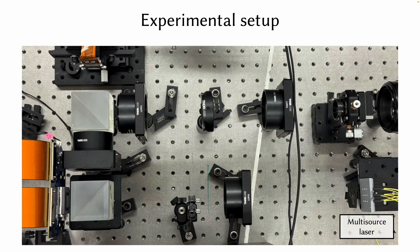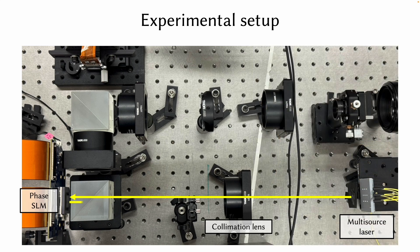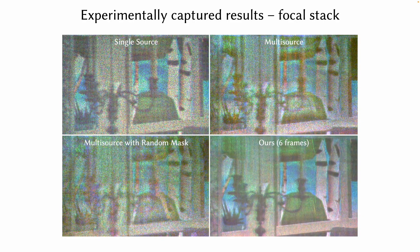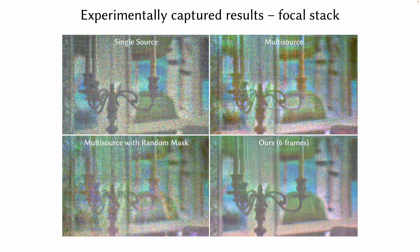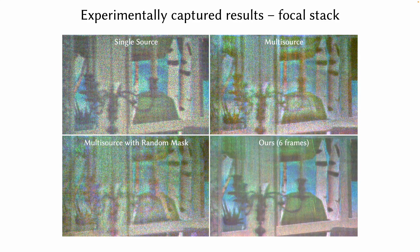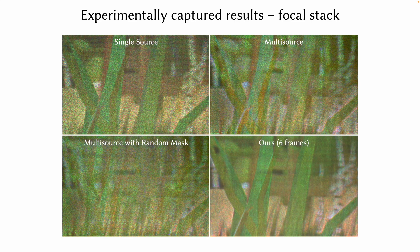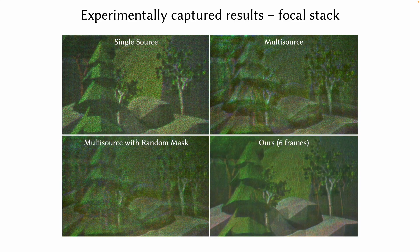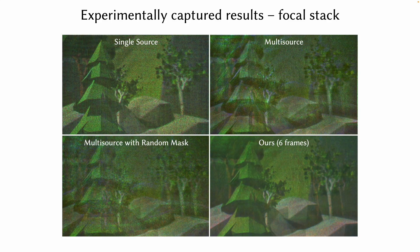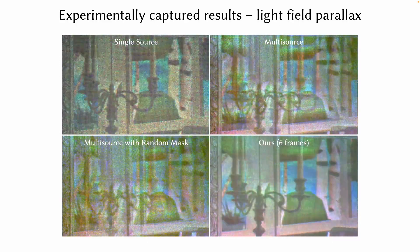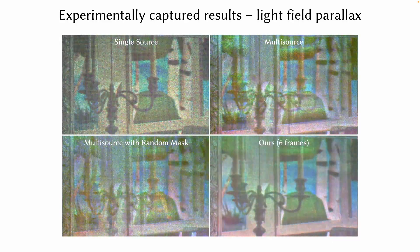We custom-printed a multi-source laser mount and built an experimental setup to validate the proposed content-adaptive light field optimization scheme, and the experimental results well match our simulation. Here, we show experimentally captured focal stacks. Our method achieves the best image quality among all other configurations and correctly reproduces the defocus blur. We also show experimentally captured light field parallax. Conventional single-source holography suffers from extreme brightness falloff at the leftmost and rightmost viewpoints, while our method successfully reconstructs light field views within the expanded eyebox.